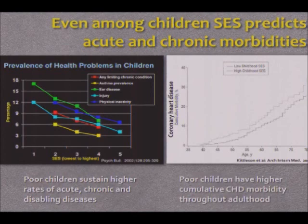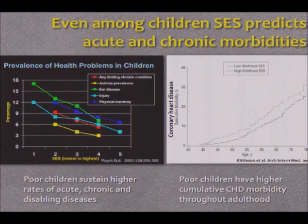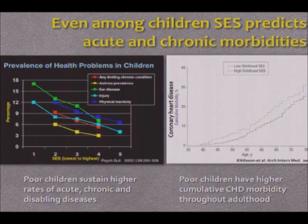What is less well known is that poor children even have higher cumulative morbidity within adulthood as their lives progress into the middle and later years of life. This shows the cumulative morbidity of coronary heart disease among children from low SES families and high SES families going from age 35 to age 75.